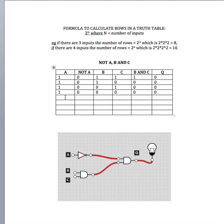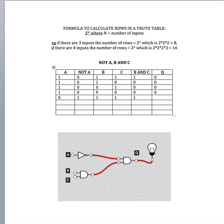Let's start turning our inputs with A as OFF or 0. If it's OFF, then its NOT output is 1. We turn both B and C on, so the AND gate output will be 1. We've got 1 as an output from NOT A and 1 as an output from B and C, so that means we've got two positive inputs into our second AND gate, giving us an output of 1.